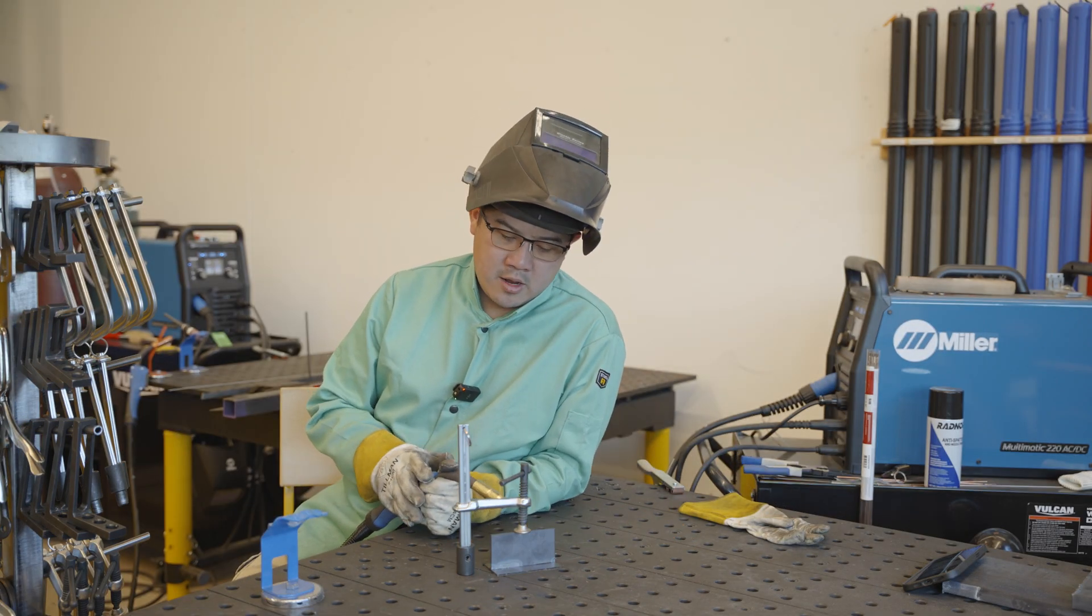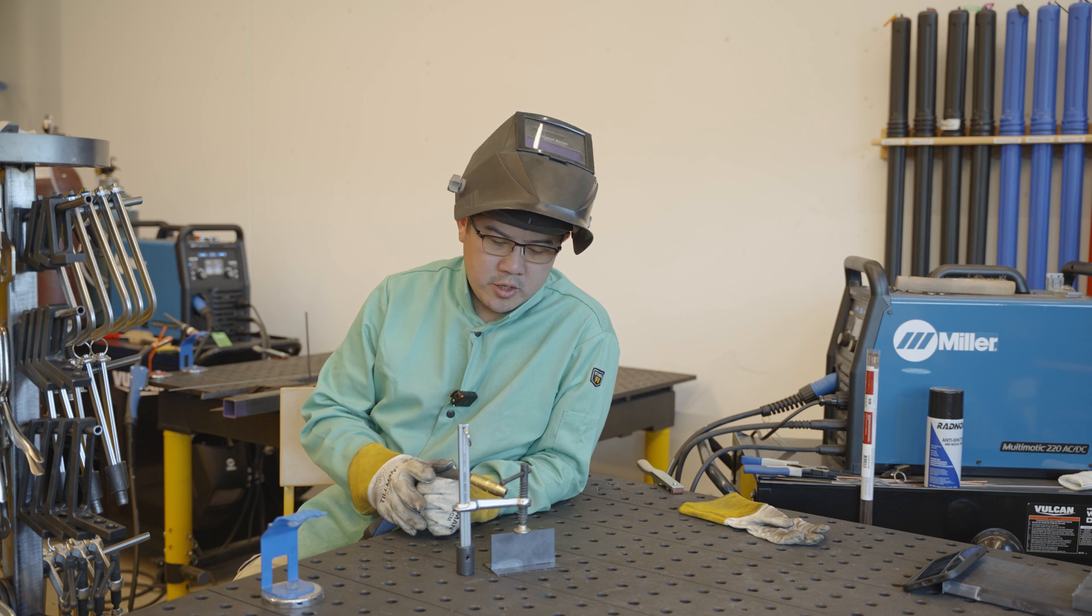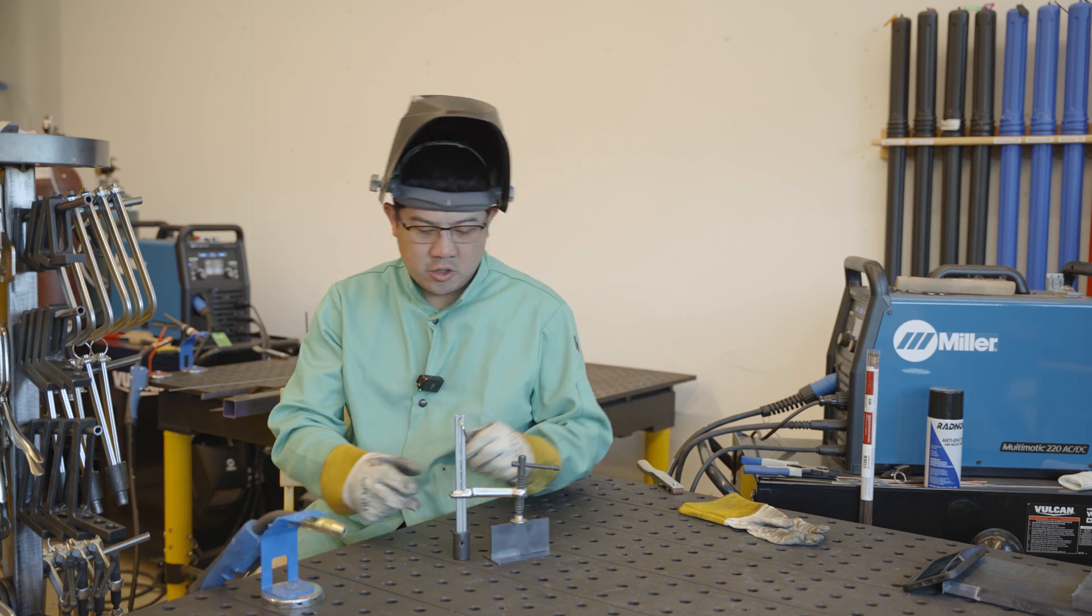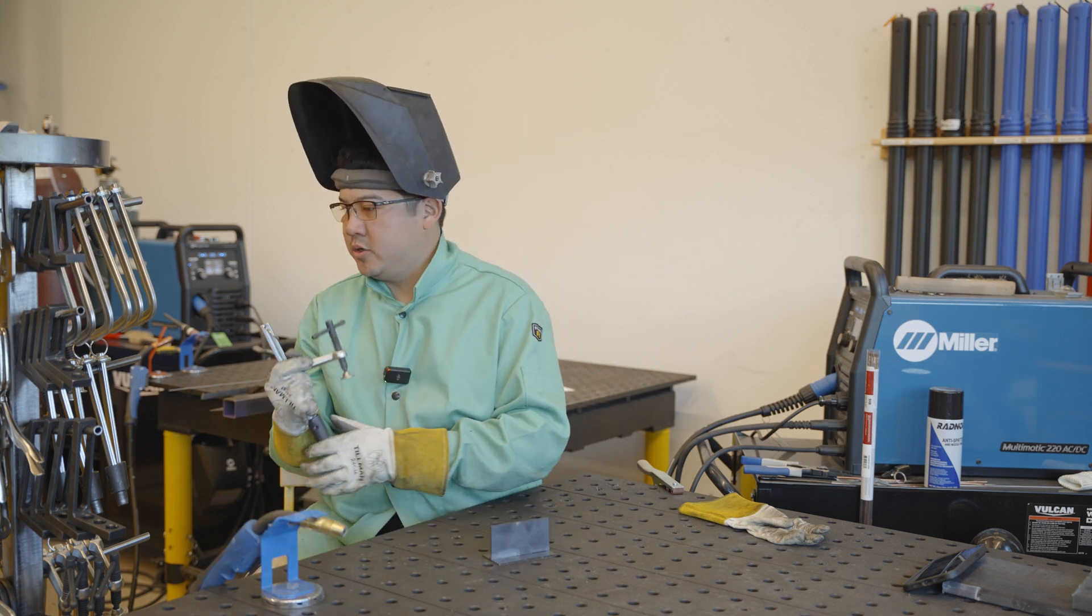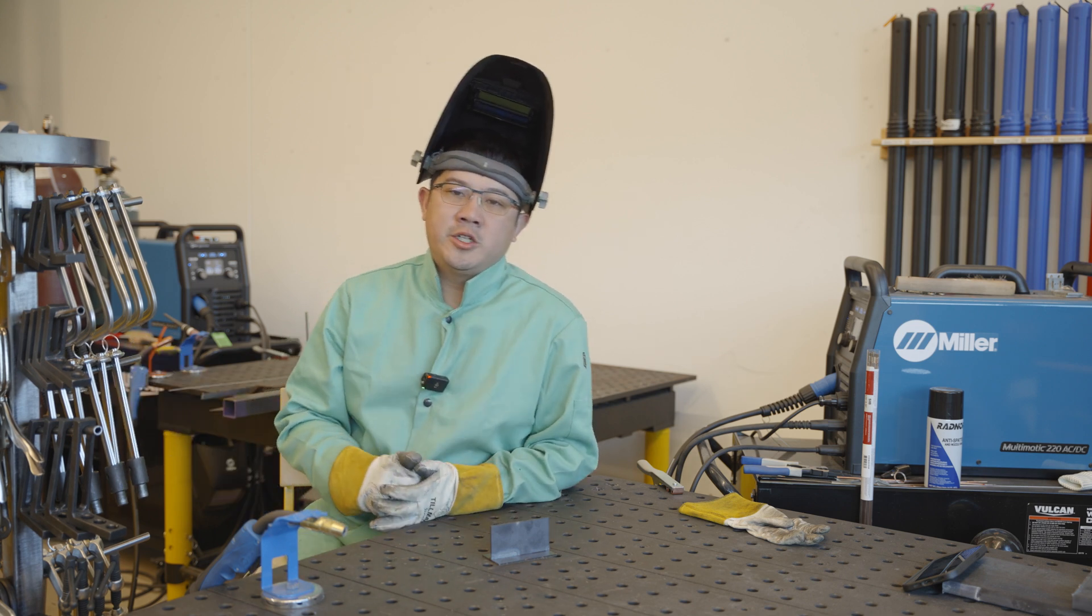Once you're done, you want to just take a look at it, make sure you're happy with the weld. It's in the right place. It looks like it's penetrated into the material and that it's doing what you want it to do. Once you're all done, you just want to make sure you're going to put away all your clamps and all your materials. You also want to make sure that you wait for your material to cool off before you touch it. It's going to be very hot.